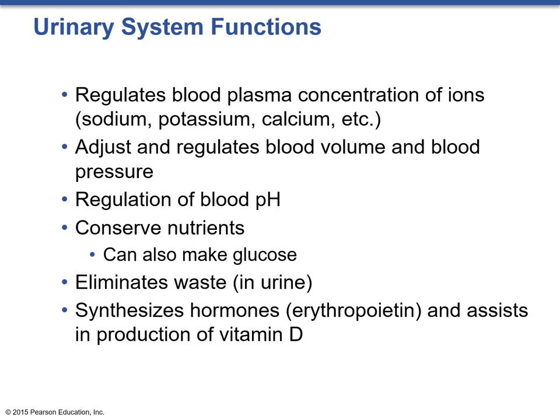It regulates blood pH levels. It conserves different nutrients and in some cases can even make important nutrients — the kidneys themselves can actually synthesize glucose. It eliminates wastes in the urine, specifically different toxic substances and drugs. It also eliminates bilirubin and uric acid. And finally, it synthesizes hormones like erythropoietin and assists in the production of vitamin D.